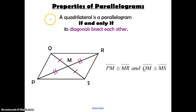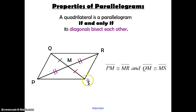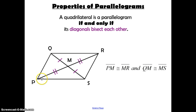This property states that a quadrilateral is a parallelogram if and only if its diagonals bisect each other. The diagonals connect the opposite corners — diagonal PR and diagonal QS intersect at point M. Point M cuts each diagonal in half, so PM is congruent to MR, and SM is congruent to MQ. However, be careful: that doesn't mean QM, MR, MS, and MP are all congruent — it only means each diagonal gets cut in half, but they're not all the same.